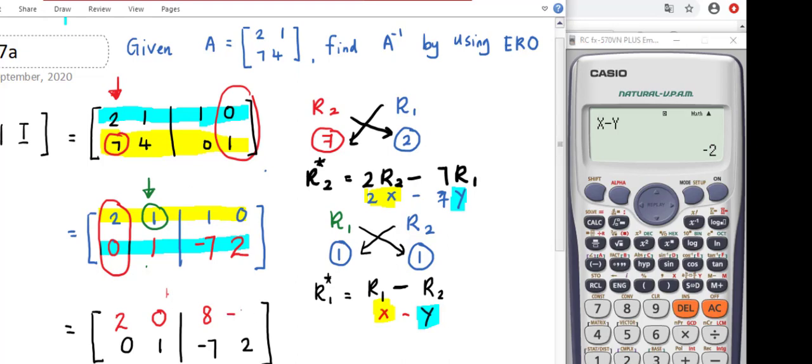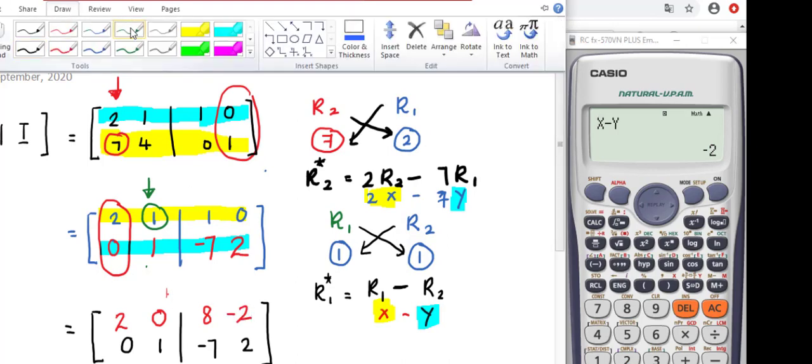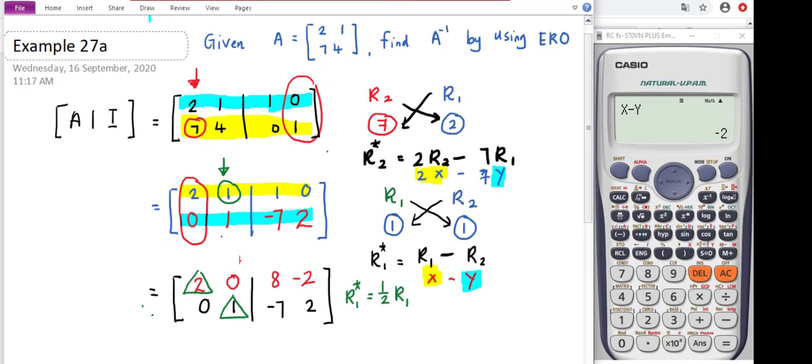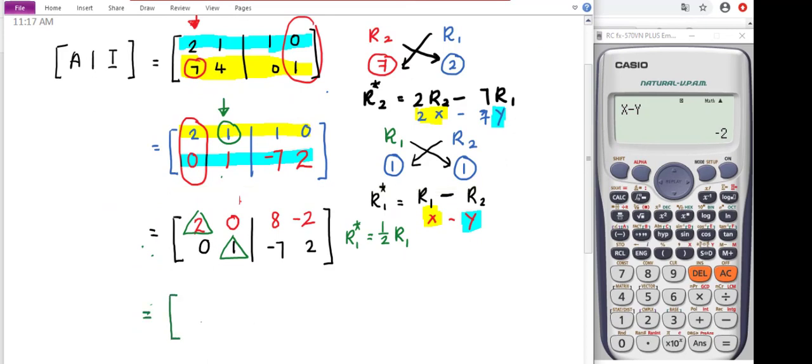Now the elements except the leading diagonal completely become zero. We would like to change the numbers under the leading diagonal to 1. Second row doesn't need to change; first row we multiply with 1/2. Row 1 becomes [1, 0, 4, -1]. By comparing with the reduced augmented matrix, we get that the inverse of matrix A is [4, -1; -7, 2].